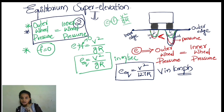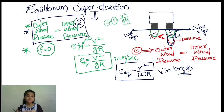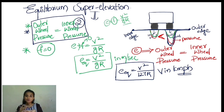If super elevation is not provided on a curve, potholes may form at the outer edge of the pavement. This is because the outer wheel carries greater pressure. When super elevation is correctly provided, the outer wheel pressure becomes equal to the inner wheel pressure, balancing the load.